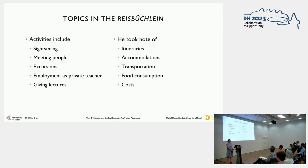So the topics in the Reissbüchlein talk about activities which include sightseeing, meeting people, excursions, employment as private teacher, that is how partially he funded his travels, and giving lectures. He took notes of the itineraries, the accommodations, transportation, food consumption, and costs.